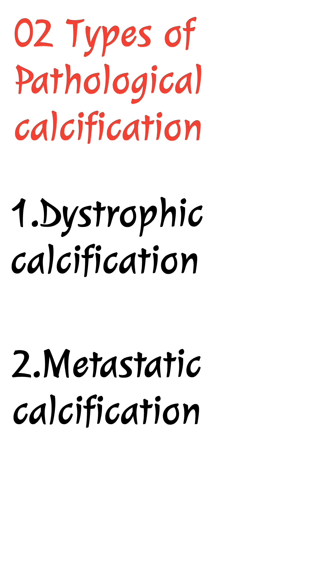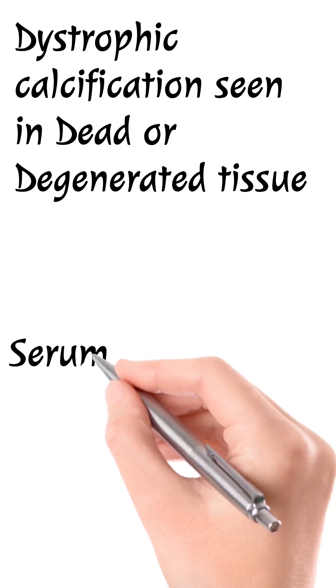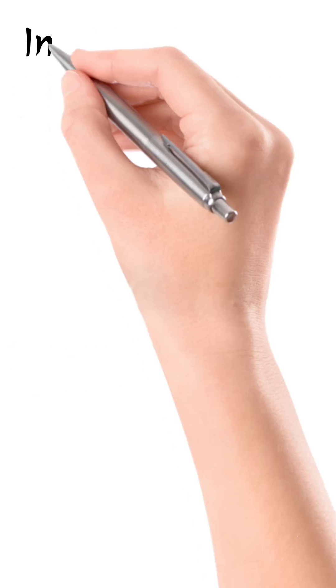Dystrophic calcification is seen in dead or degenerated tissue and serum calcium level is normal. For example, atherosclerosis, rheumatic heart disease, and TB.